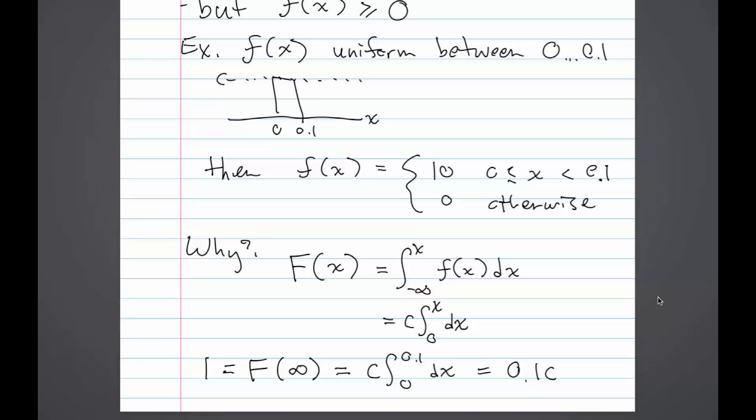Because big F of x, since little f of x is the derivative of big F of x, big F of x is the integral of little f of x. In the integral, we can take the constant out and then calculate the integral from 0 to x.